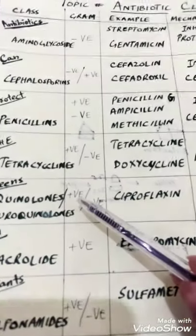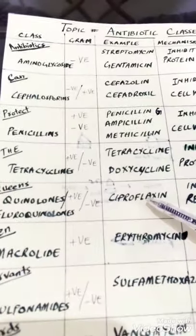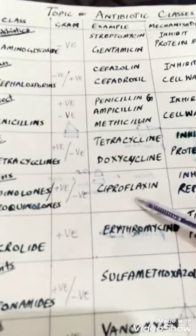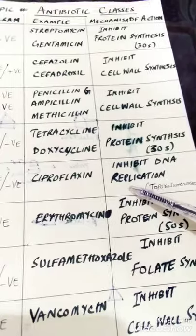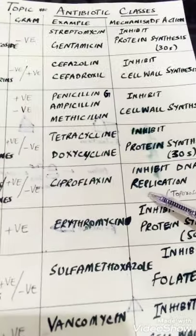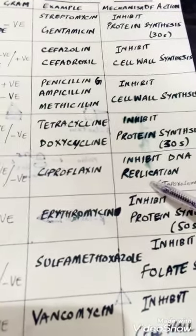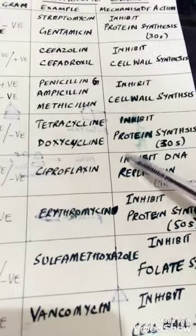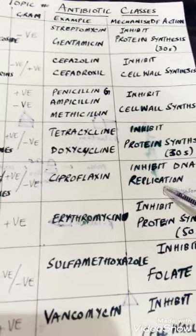The fifth class is quinolones and fluoroquinolones. They act on both gram-positive and gram-negative bacteria. An example is ciprofloxacin. They work by inhibiting DNA replication — the duplication of DNA for new cells — thereby killing the bacteria.